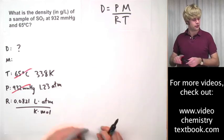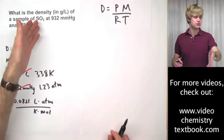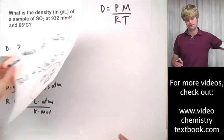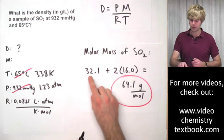Now the last thing that I'll need to do is solve for the molar mass of the gas that I'm using, which here is sulfur dioxide, SO2. In order to get the molar mass of SO2, I'm going to have to take the molar mass of sulfur